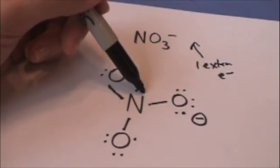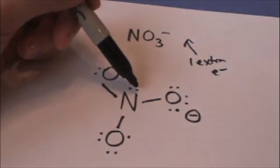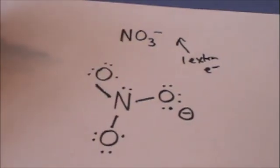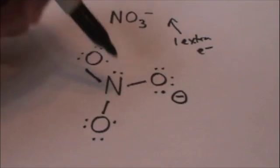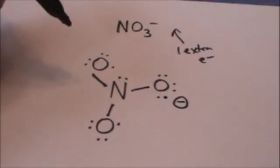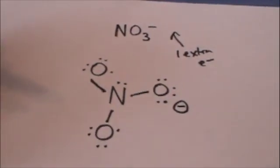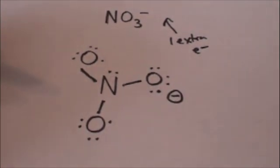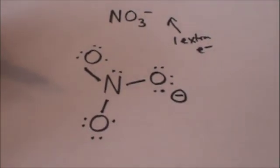It has its three bonds and two lone pairs of electrons. Two, four, six, eight. So it's happy, but this oxygen is not happy. And that oxygen is not happy. Hmm. What are we going to do?